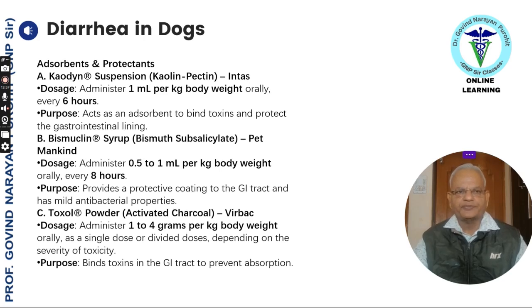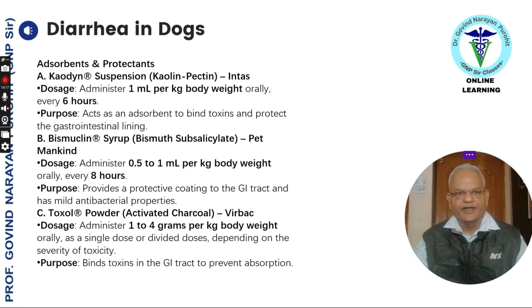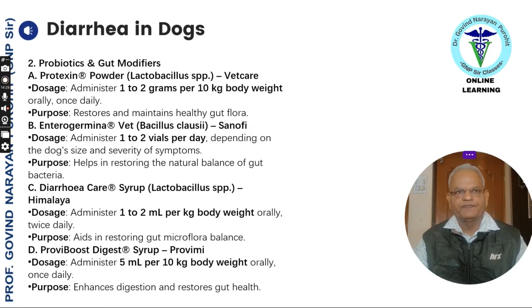For diarrhea in dogs, adsorbents and protectants like kaolin-pectin can be given 1 ml per kg body weight orally every 6 hours. Bismuth subsalicylate (Pet-Bismol) can be given 0.5 to 1 ml per kg body weight orally every 8 hours. Activated charcoal is administered at 1 to 4 grams per kg body weight as a single dose or divided doses depending on the severity of toxicity.